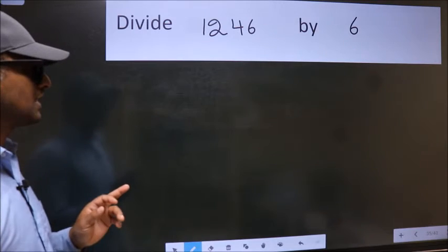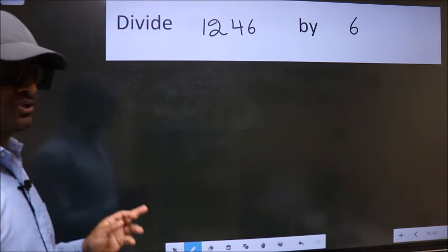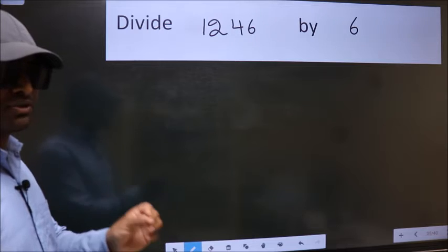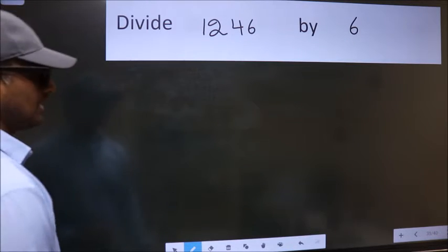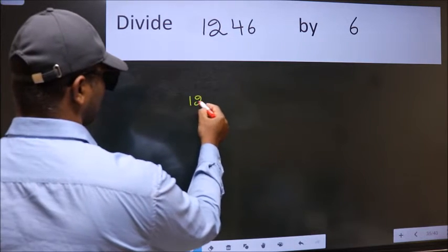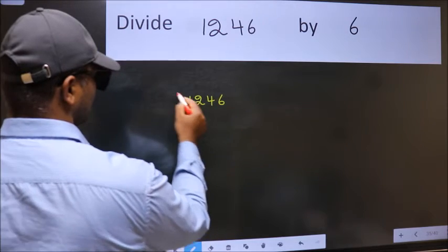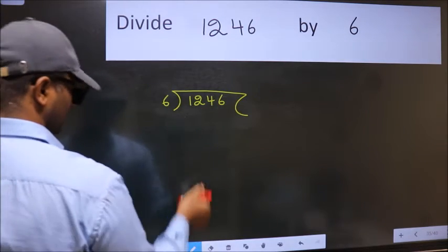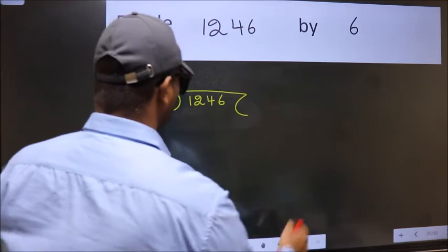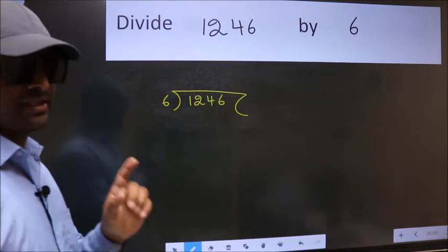Divide 1246 by 6. To do this division, we should frame it in this way. 1246 here, 6 here. This is your step 1.